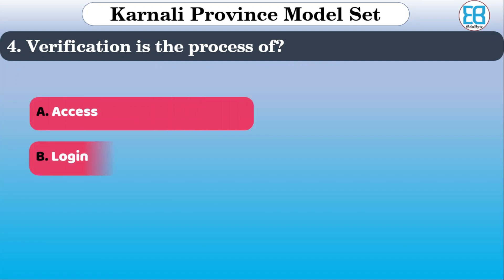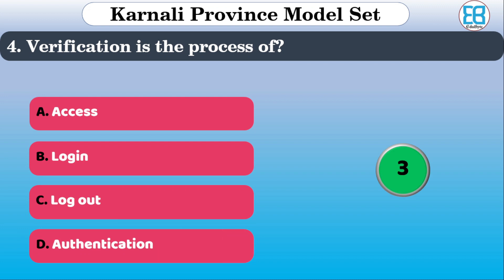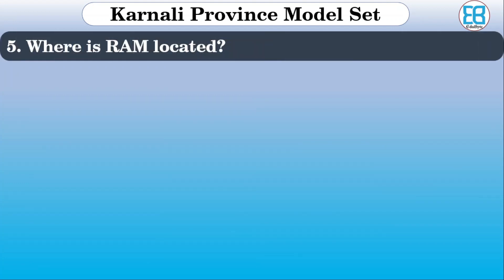Verification is the process of what? The options are: access, login, logout, authentication. The correct option is authentication — access is used for login process.